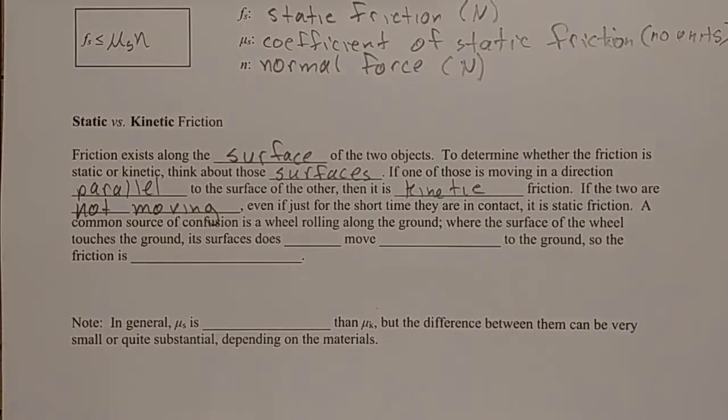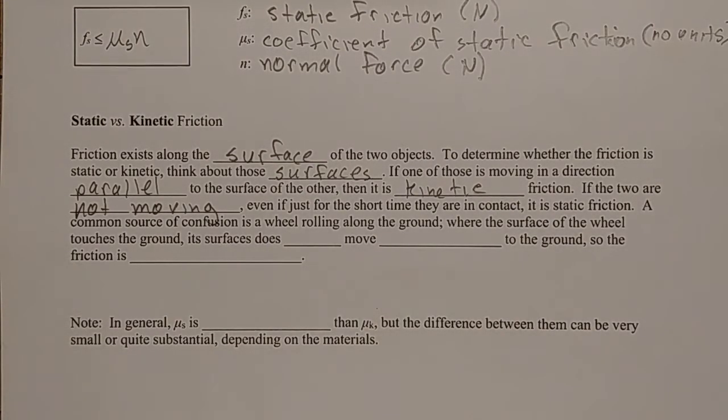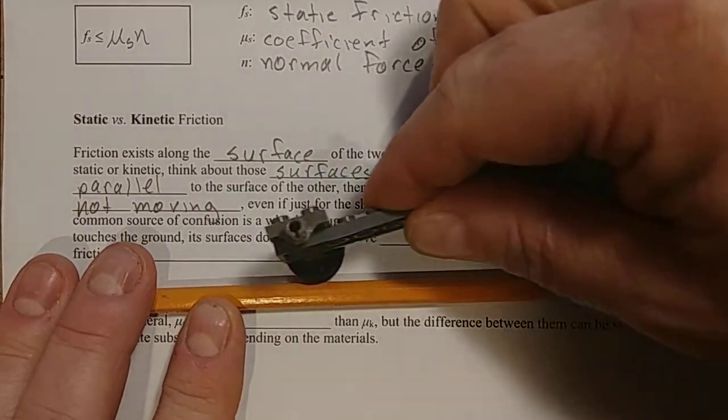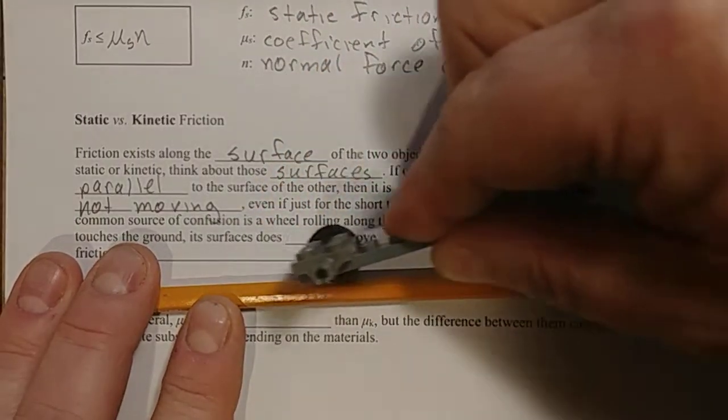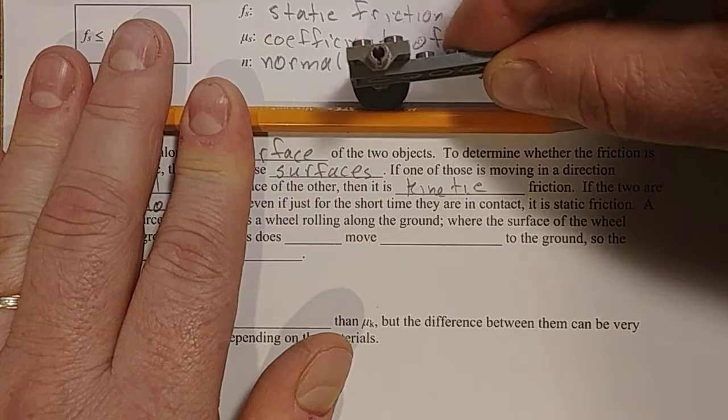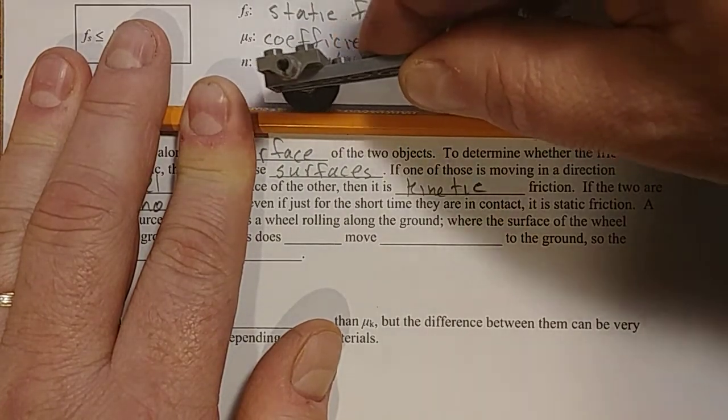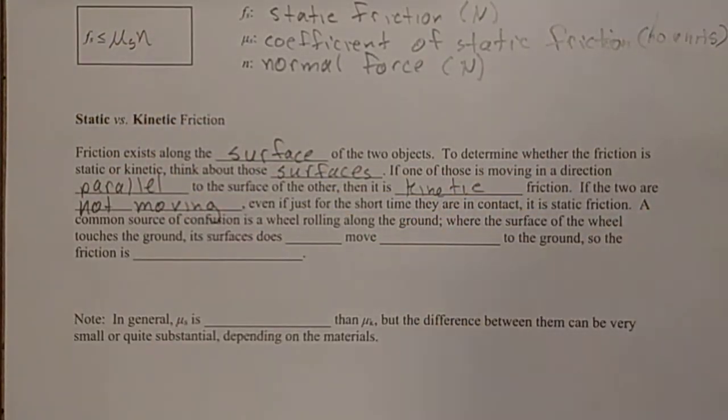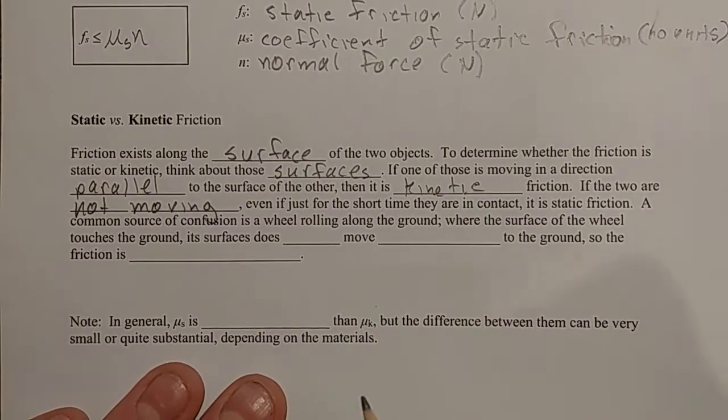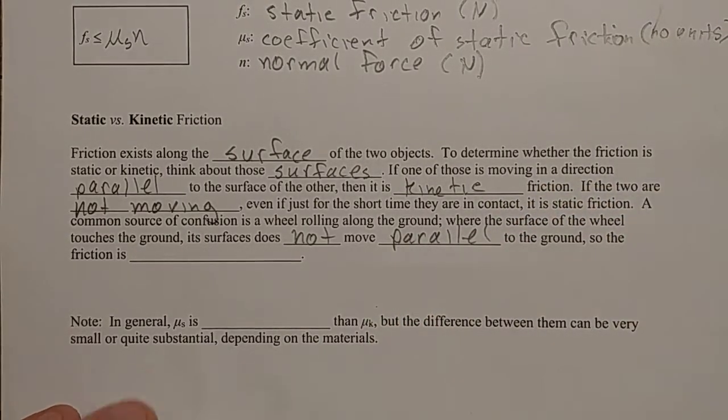An example of this is a wheel rolling across the floor. So I'm going to try to use an example of this right here. We're going to imagine this is the floor, and this is my wheel. My wheel is moving along the floor. And what happens normally when a wheel moves along the floor is that anywhere where the wheel touches the ground, it's not sliding along the ground. It just touches for an instant and then moves along again. So the surface touches the ground, its surface does not move relative to the ground or parallel to the ground. So the friction is static friction.